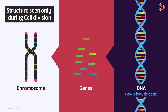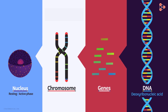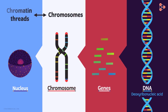So usually, when the cell is in the resting or active phase apart from cell division, the chromosomes exist as tangles or threads called chromatin. In other words, chromosomes and chromatin are the same thing. The genetic material is locked in the form of these chromatin threads present in the nucleus.